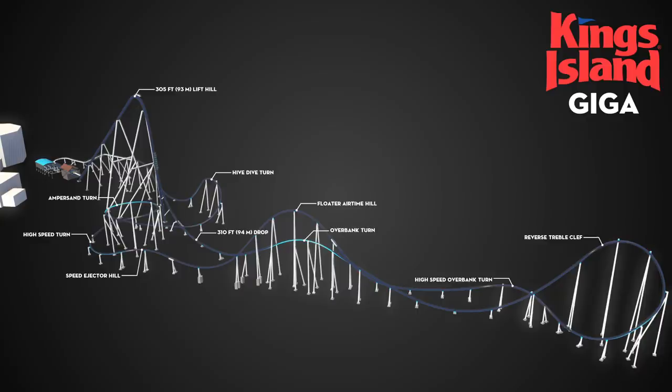You have the high-speed overbank turn, which is something I really love, and you have my favorite element on Fury. I think this is a reverse treble clef turn. Again, please correct me wrong if I make any mistakes on names and all that. But I'm definitely loving the looks of this. It looks like you got actually more speed hills than I even predicted. It looks like there's three actually instead of two.